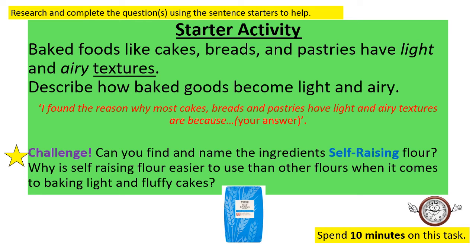Welcome to the lesson. The first starter activity is to do with baked foods. Baked foods like cakes, breads, and pastries have light and airy textures — describe how baked goods become light and airy. You can research online, use books, newspapers, or whatever else will help. Use the sentence starters shown in the middle in red: 'I found the reason why most cakes, breads, and pastries have light and airy textures are because...' Answer in full sentences, ending with a conclusion for the challenge.